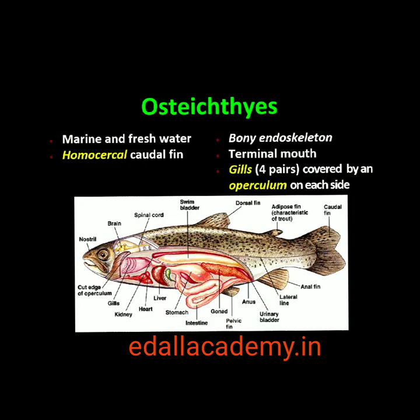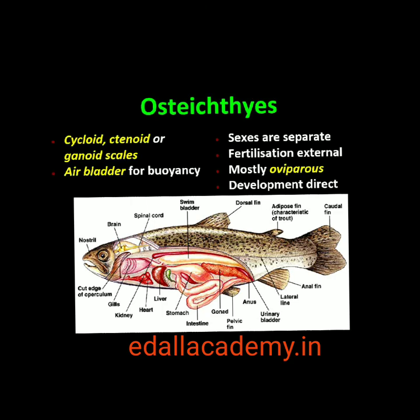Third is class Osteichthyes. It includes both marine and fresh water fishes with bony endoskeleton. Their body is streamlined. Mouth is mostly terminal. They have four pairs of gills which are covered by an operculum on each side. Skin is covered with cycloid or ctenoid scales. Air bladder is present which regulates buoyancy. Heart is two-chambered — one auricle and one ventricle. They are cold-blooded animals. Sexes are separate. Fertilization is usually external. They are mostly oviparous and development is direct.